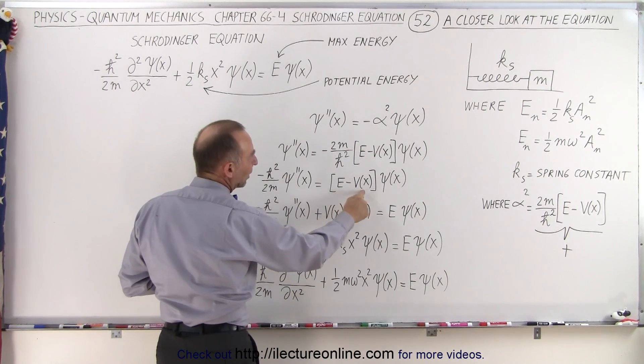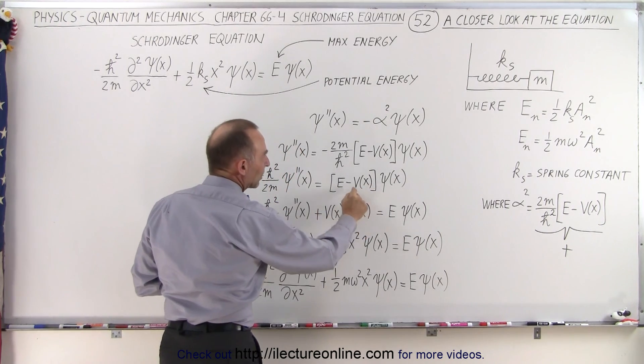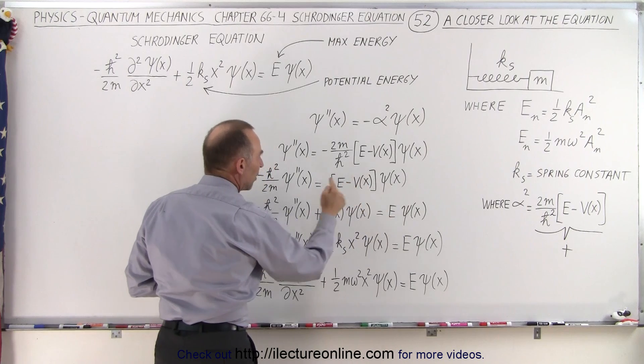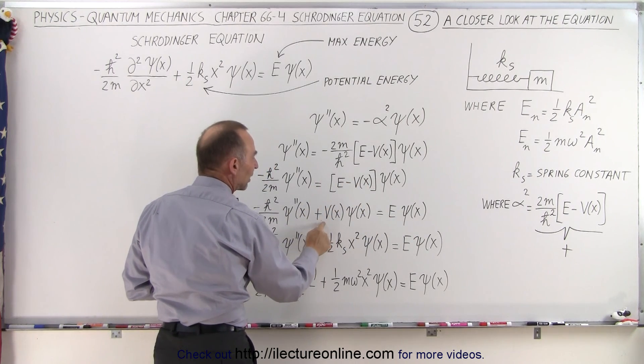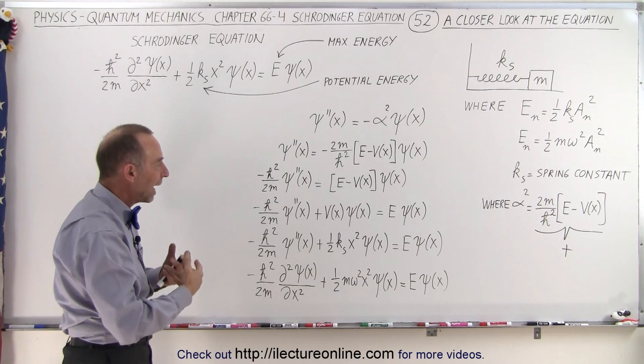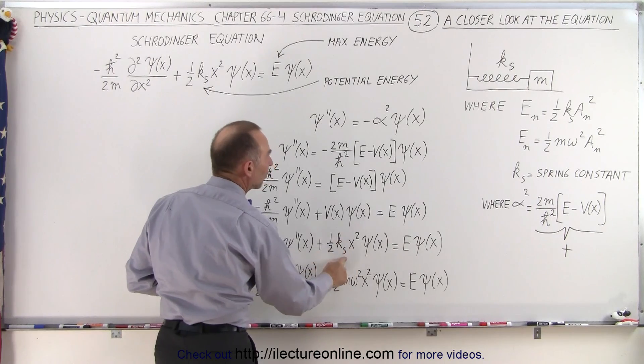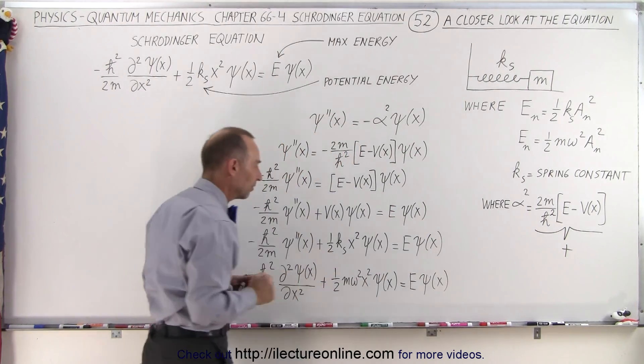On the right side we still have E minus V times the wave function, and then we separate the two by taking the minus V times the wave function and moving it to the left side of the equal sign—that becomes now a positive. And of course V of x, that's the potential energy of the oscillator as a function of x, which then would be one-half k x squared, k sub s of course being the spring constant of the oscillator.